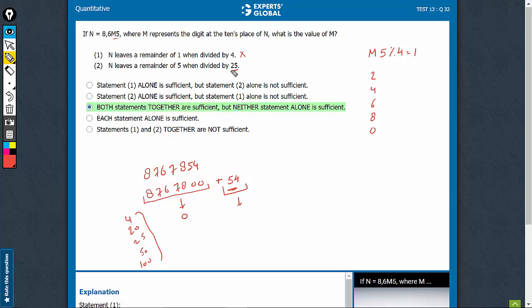So for 25 also, the same thing applies. If the remainder is 5, that means M5 with 25 is giving a remainder of 5. So there are two possibilities. Again, many will not look at this possibility of 0, 5.